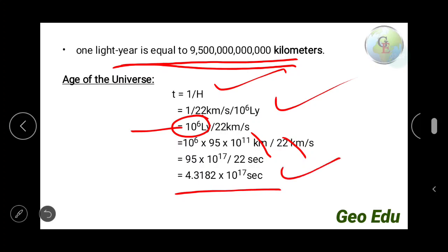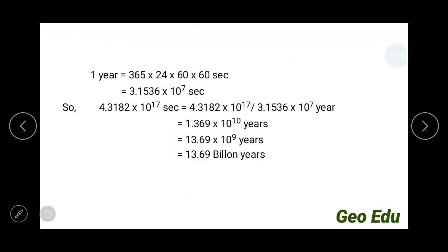This is the age of the universe in seconds. We will convert it to years. One year is equal to 365 days, 24 hours, 60 minutes, and 60 seconds. So the value is 3.1536 into 10 to the power 7 seconds. So 4.3182 into 10 to the power 17 divided by 3.1536 into 10 to the power 7 year.